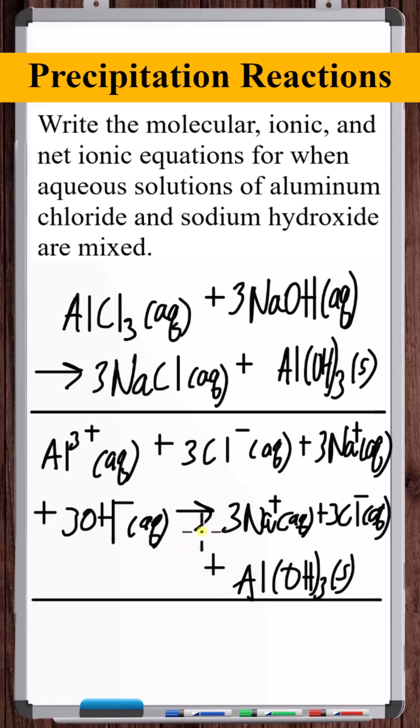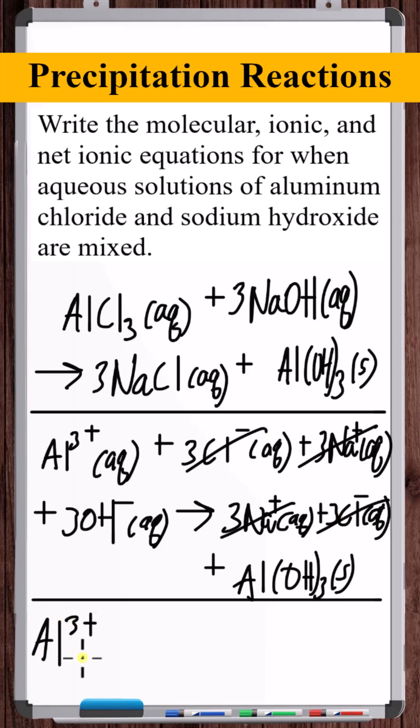For the net ionic equation, we cancel the spectator ions from the ionic equation, and what we're left with is the net ionic equation.